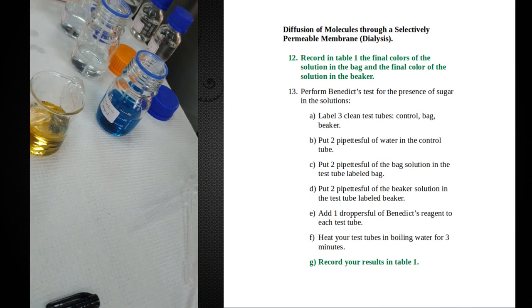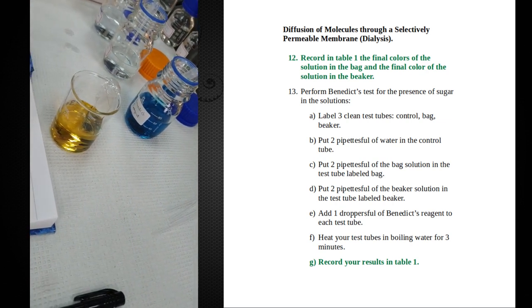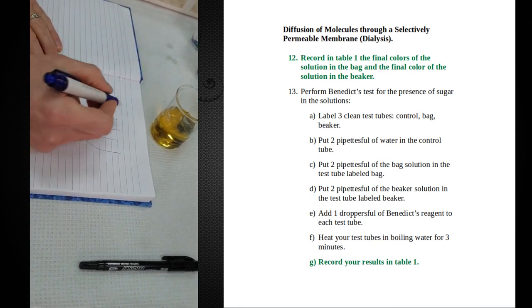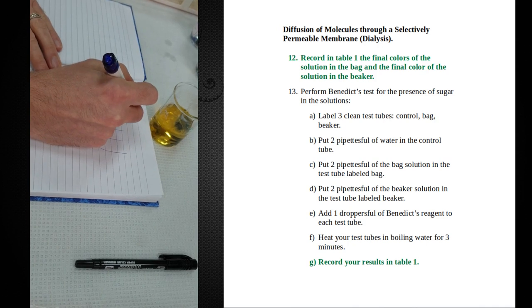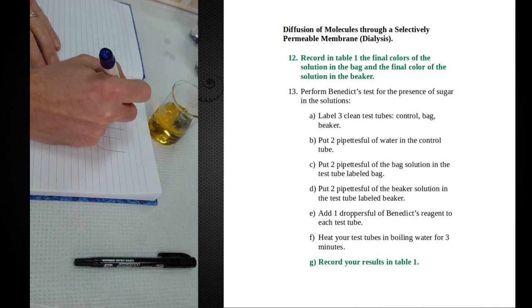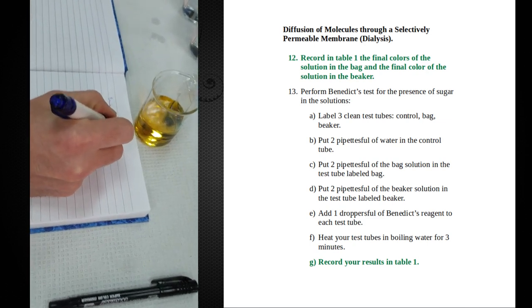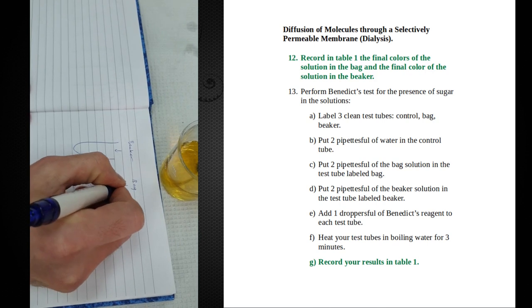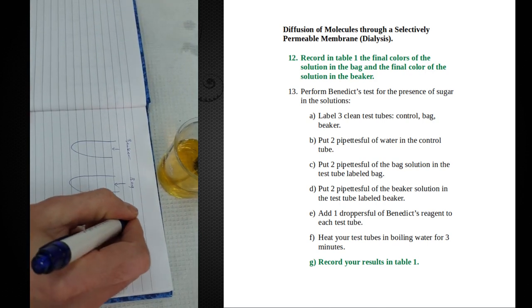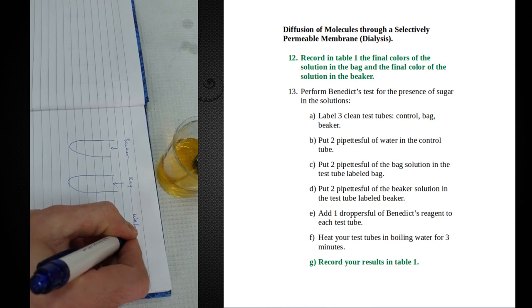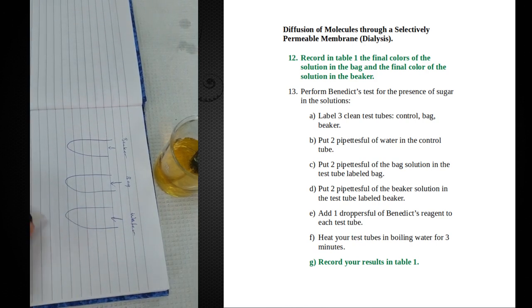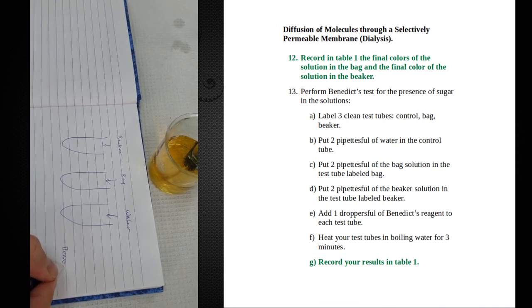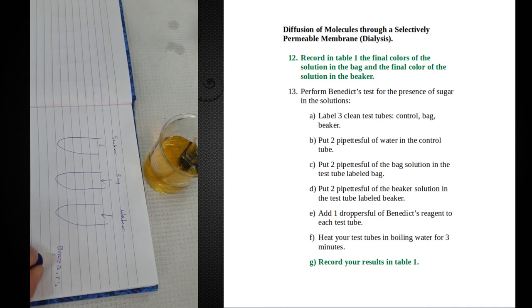We're going to set up three test tubes. One of them will get the contents of the beaker. One of them will get the contents of the tubing, so the bag. And one of them will get water. To each one of these, we will add some Benedict's reagent.